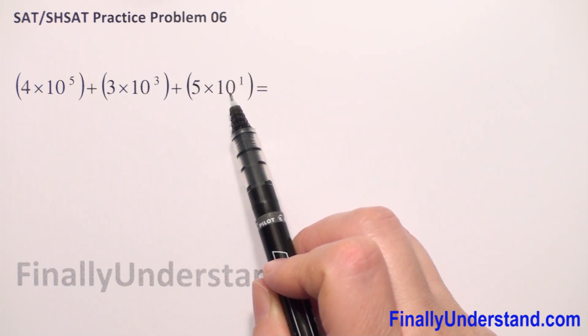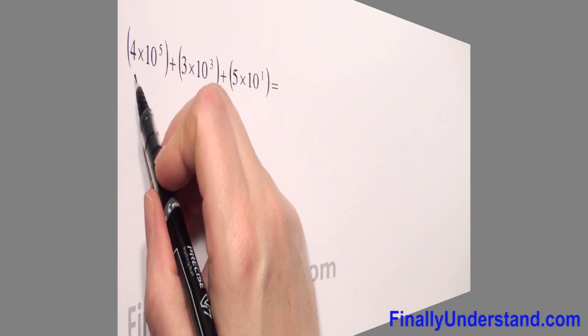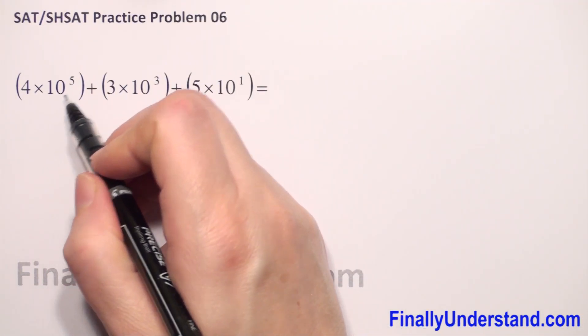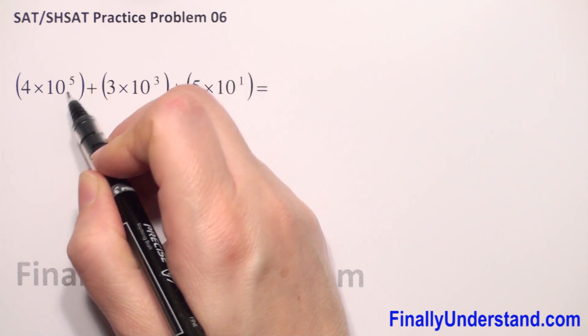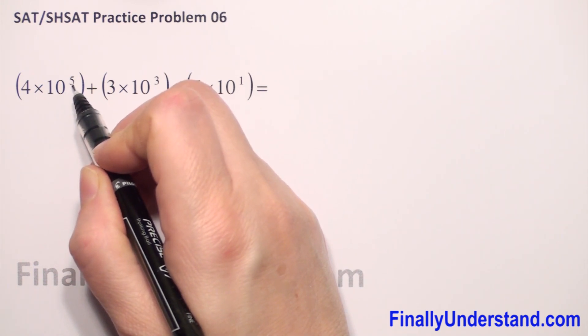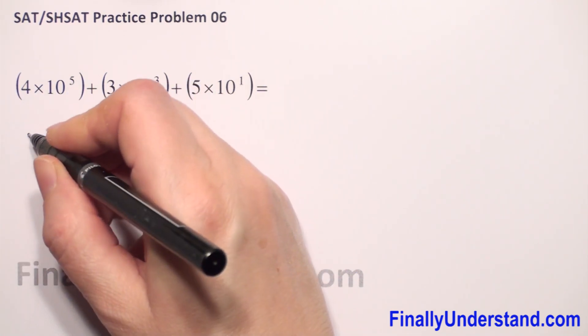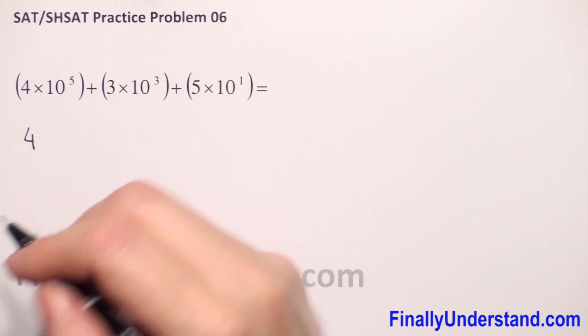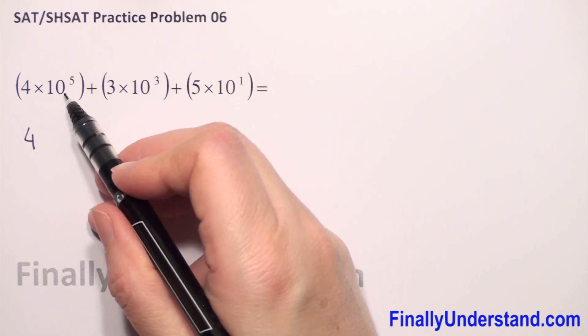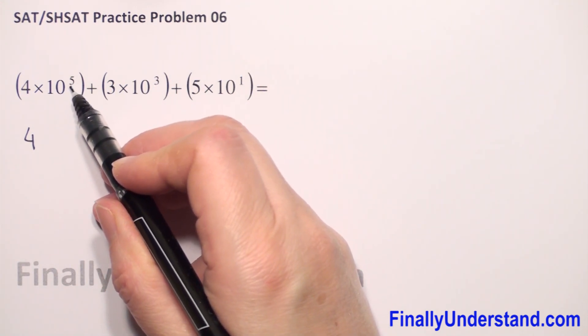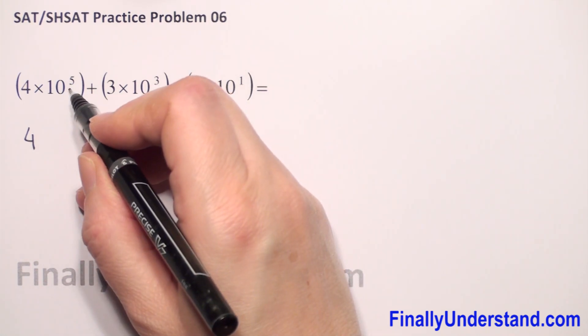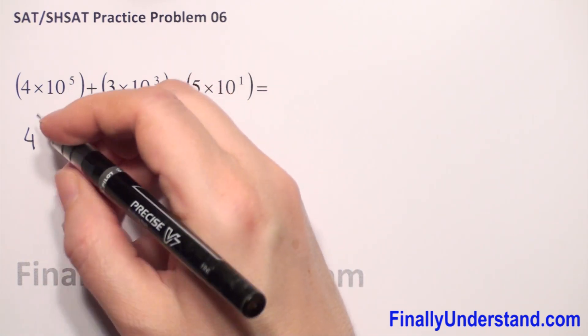We have powers of 10. We have to do multiplication: 4 times 10 to the 5th. When we have power of 10, the power tells us how many zeros we have to write. So we always copy the number. We have 4 in this example. And now we just write how many zeros we have here: 5, because the power of 10 is 5.